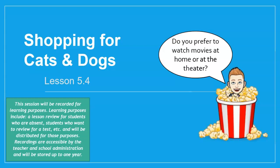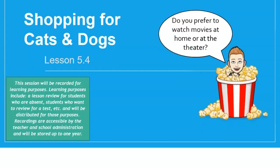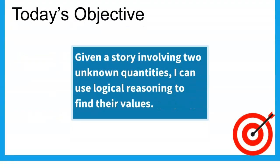Today we'll be looking at lesson 5.4, shopping for cats and dogs. Our objective today is: given a story involving two unknown quantities, I can use logical reasoning to find their values. This is sort of like math, but we're going to do some logical reasoning today, maybe related to systems of equations, since that's what we've been studying.